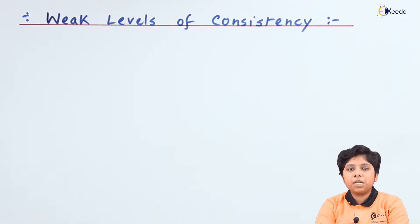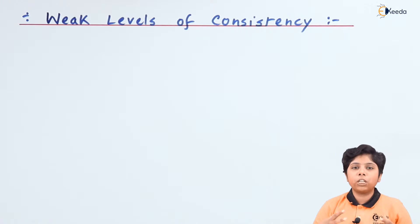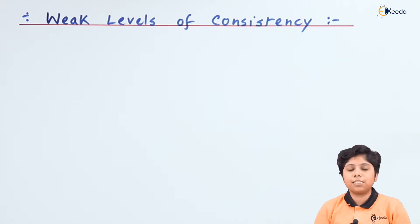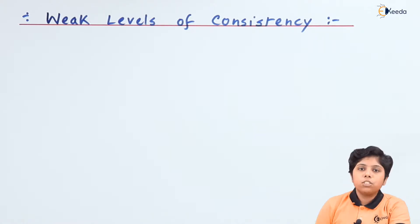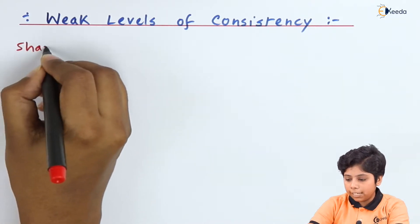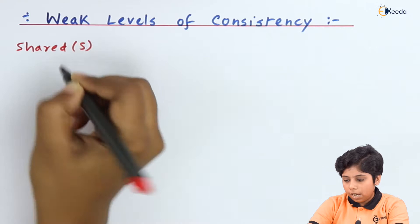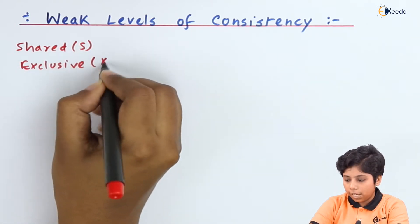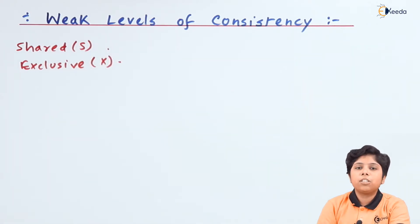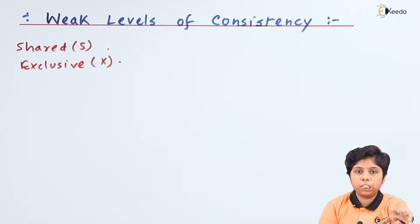The Degree 2 level of consistency is similar to the two-phase locking protocol in terms of acquiring and releasing a lock on a particular data item, but it does not need to maintain the two phases of that protocol. It also uses two modes of lock: shared mode S and exclusive mode X.